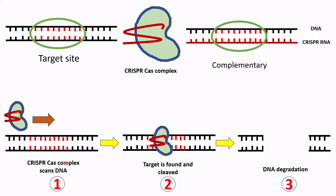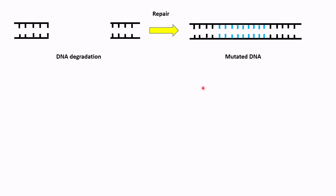Once the guide RNA finds its target site, Cas cuts the DNA. This causes a DNA mutation that disables the gene, making the gene inoperative — a result known as gene knockout.